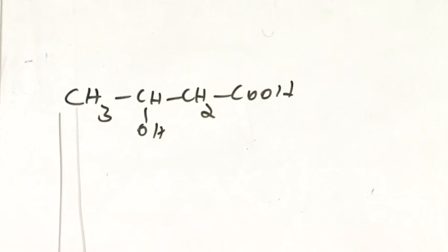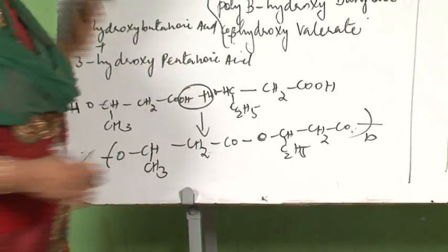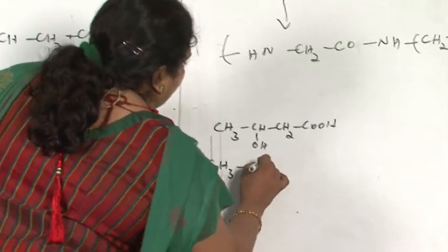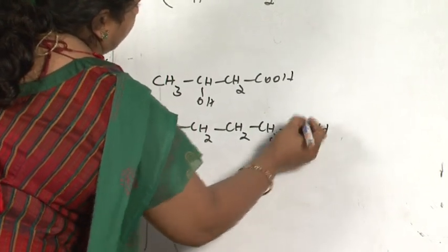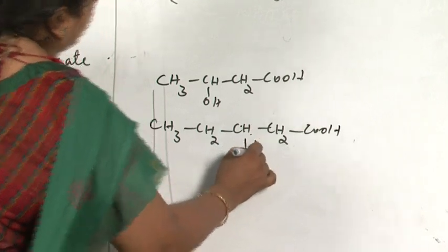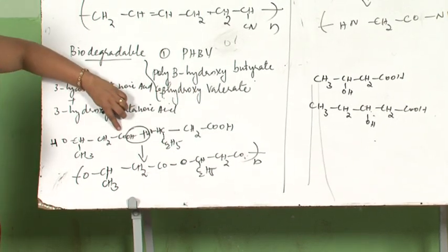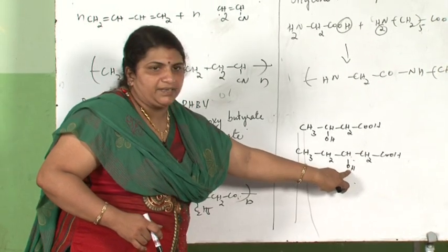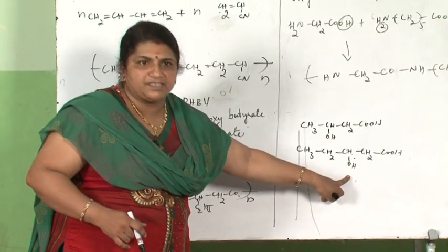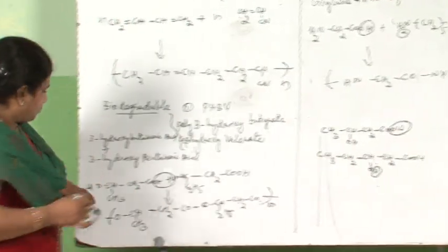The structure is CH3-CHOH-CH2-COOH (3-hydroxybutanoic acid) plus 3-hydroxypentanoic acid: CH3CH2-CHOH-CH2-COOH. The acid entity of one monomer combines with the alcoholic (hydroxyl) entity of the other to form an ester linkage — this is a condensation reaction eliminating water.